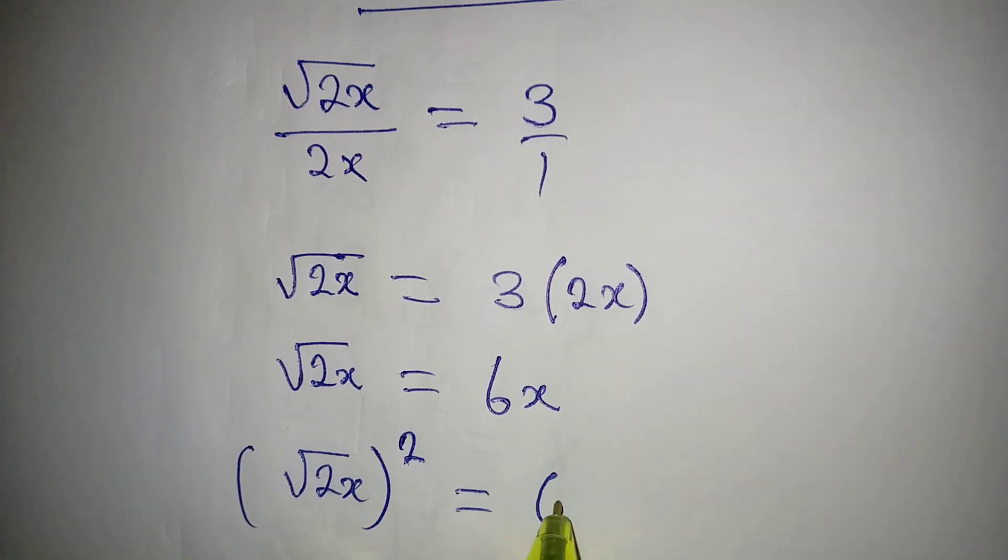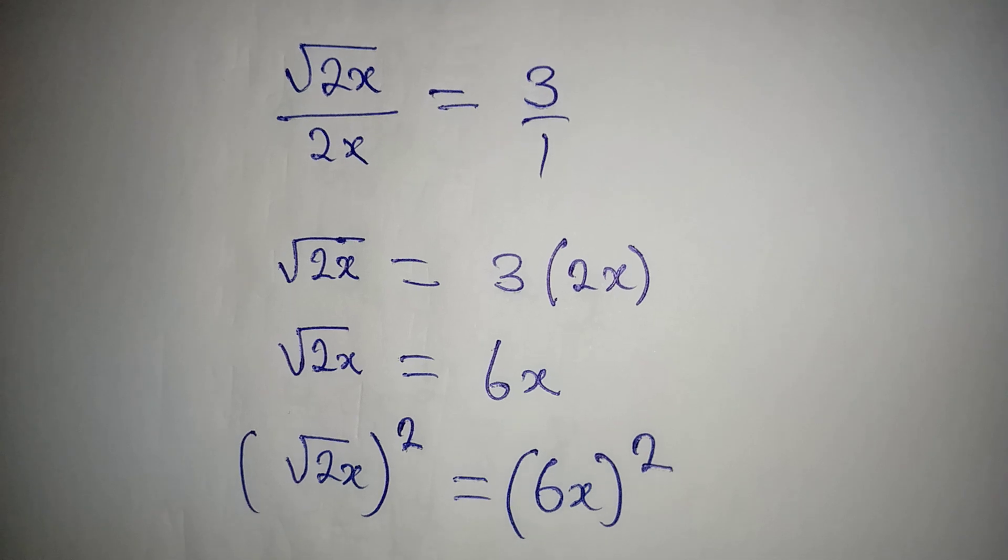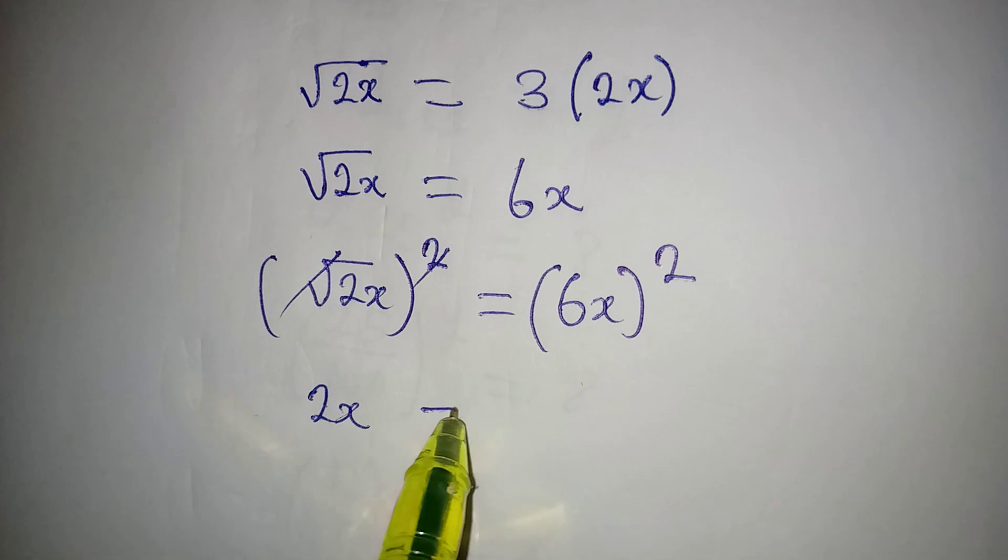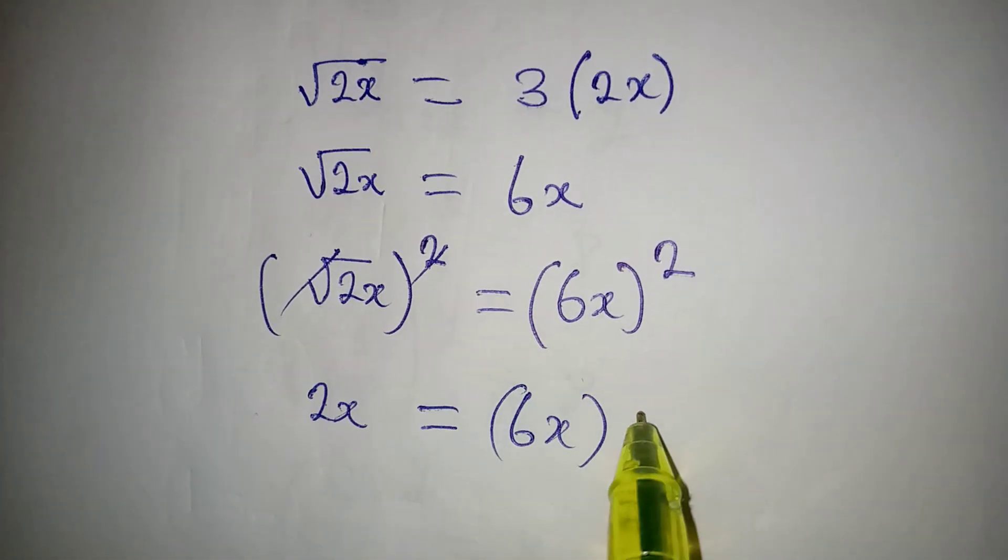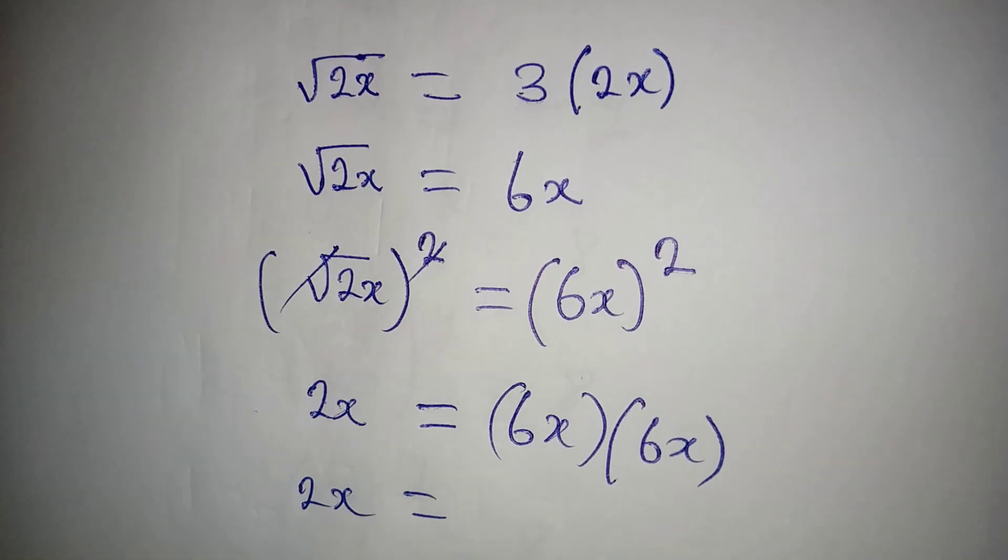Equal to 6x, then the whole of this is squared. From here, this and this will cancel, so 2x will be equal to 6x multiplied by 6x.